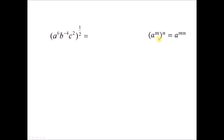When you have a bracket with an outer exponent, you use the formula where m multiplies n — every index inside is multiplied by the outer power. So the indices 6, negative 4, and 2 are all multiplied by 1 over 2. So 6 times 1/2, negative 4 times 1/2, and 2 times 1/2 gives you the final answer.